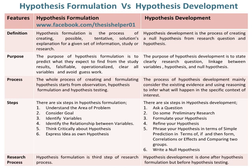There are also six steps in Hypothesis Development. Step one: ask a question. Step two: do some preliminary research. Step three: formulate your hypothesis. Step four: refine your hypothesis. Step five: phrase your hypothesis in terms of a simple prediction using if-and-then form, correlations or effects, and comparing two groups. Step six: write a null hypothesis.